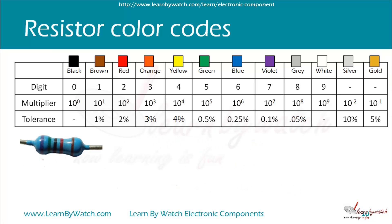Now, this is a 5-band code resistor. The first, second, and third bands are digits. First is blue — 6, green — 5, black — 0. Then the fourth band is the multiplier and it is red here, so we will multiply by 10 to the power 2. The last band is brown, so it is the tolerance — plus or minus 1 percent, since 1 percent is given for brown.